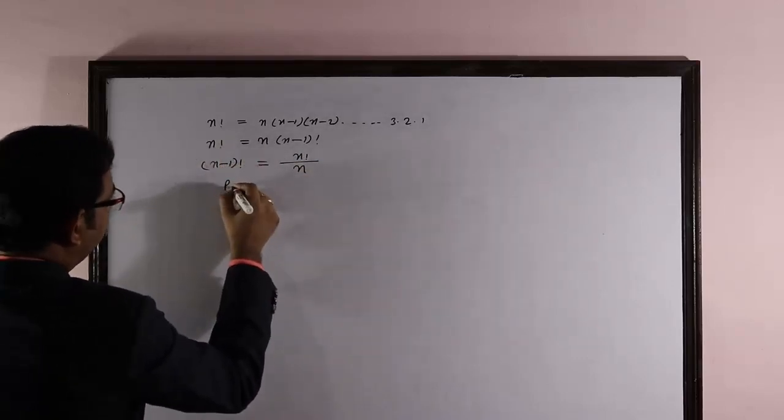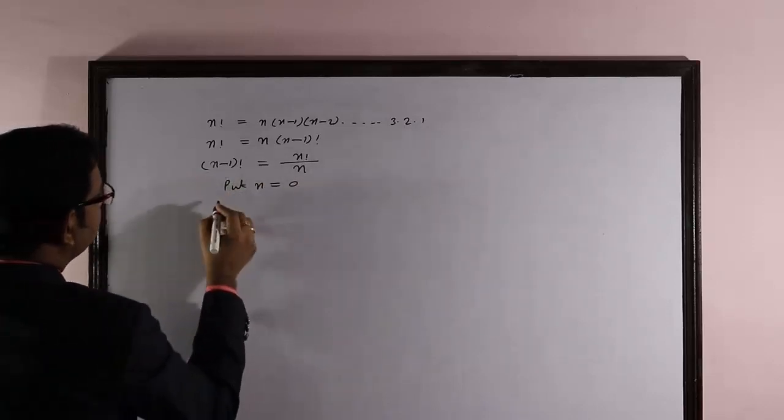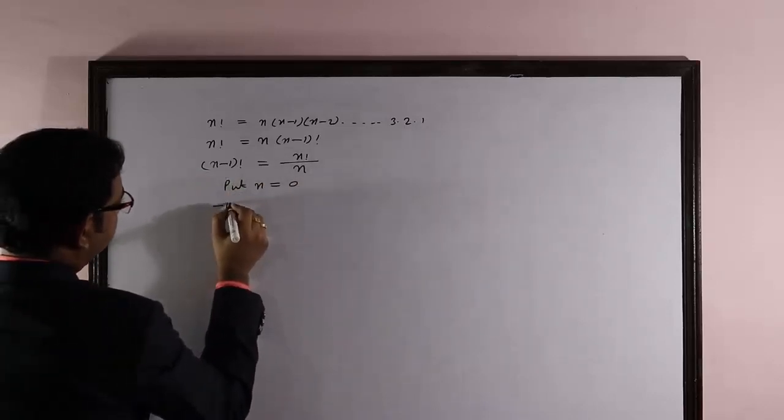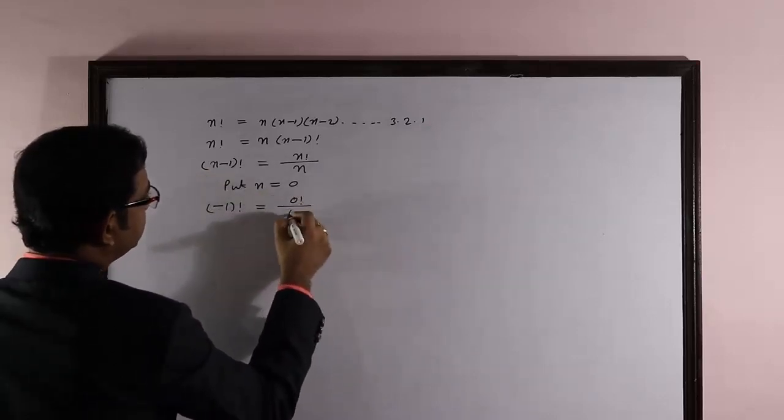Now simply put n as 0. When you put n value, then see what you get. Negative 1 factorial is equal to 0 factorial divided by 0.